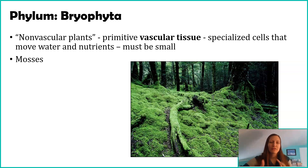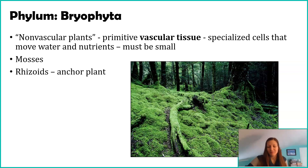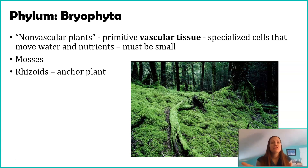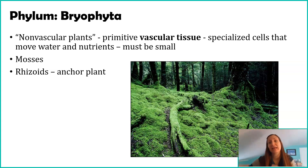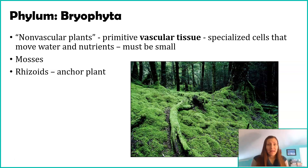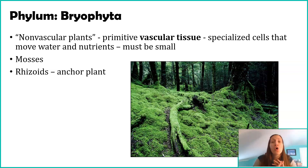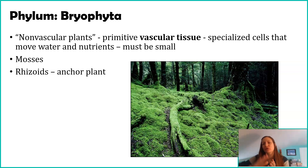Something different about mosses and other seedless non-vascular plants is they don't even have roots. They have a structure called rhizoids, which are easy to mistake for roots. Roots have two functions: they anchor the plant and absorb water. Rhizoids, however, only anchor the plant — to a log, soil, tree, or rock — and do not do any water or nutrient absorption.